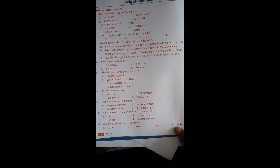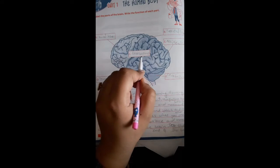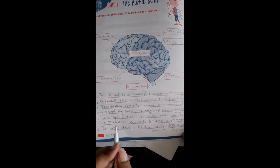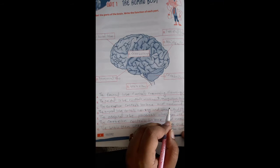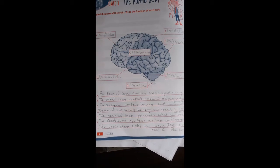The largest part of the brain is cerebrum. So, cerebrum is the largest part of the brain. Here is the cerebrum. I want to say that cerebrum is the largest part of the brain.